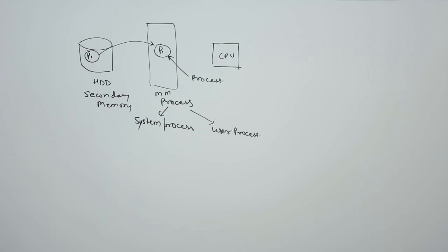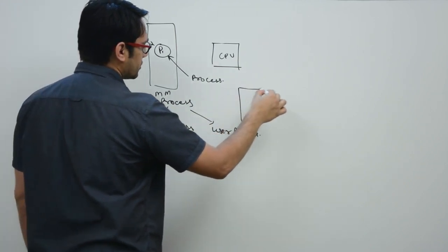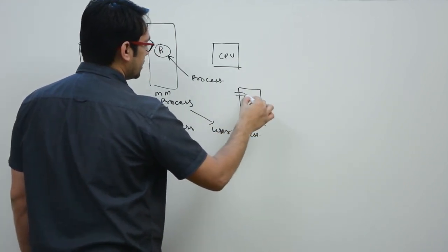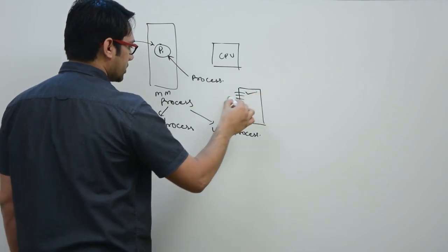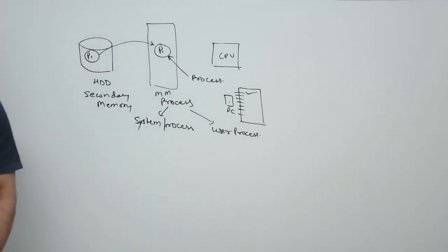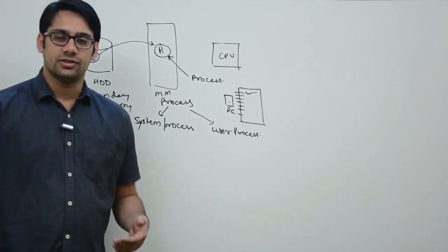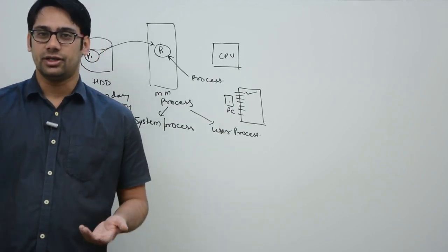A process is more than just program code — it also includes the current activity represented by the value of the program counter and the contents of the processor registers. Every process has a set of instructions, and the program counter tells you the address of the next instruction to execute. A program is a passive entity, but a process is an active entity.